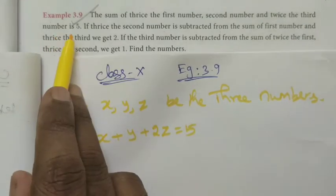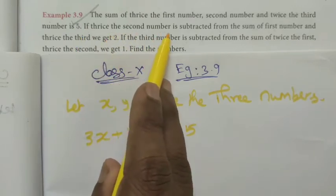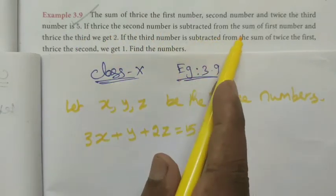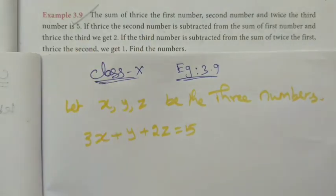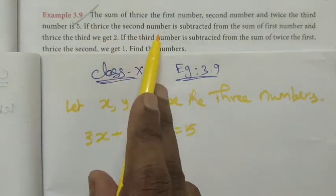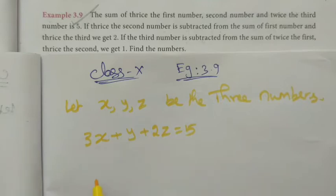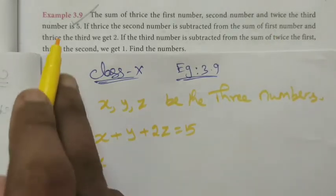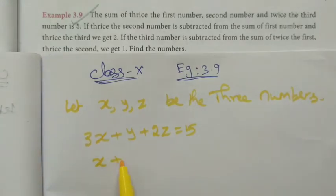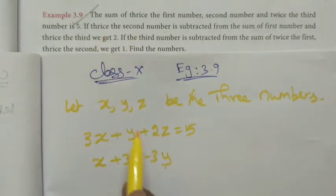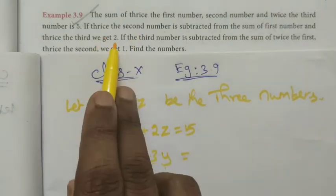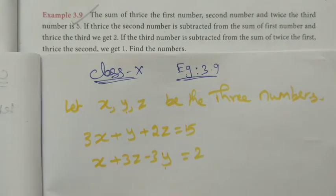Second condition: if thrice the second number is subtracted from the sum of the first number and thrice the third number, that is x plus 3z minus 3y equals 2. This gives us the second equation.